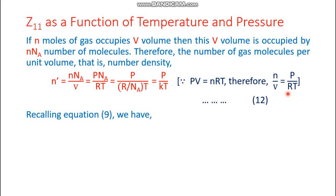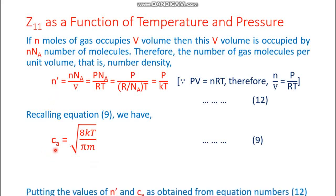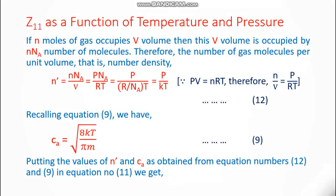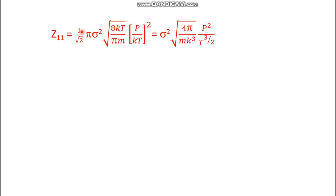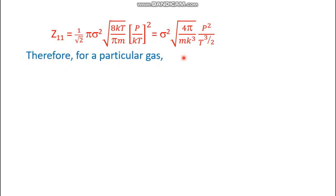Recalling equation 9, the average velocity CA = √(8kT / πm). Using equations 9 and 12 to substitute CA and n' into equation 11, the final result is Z11 = sigma² √(4π/m · k³) · p² / T^(3/2). The terms involving sigma, m, and k are constants, while p and T are variables. This is equation 13.